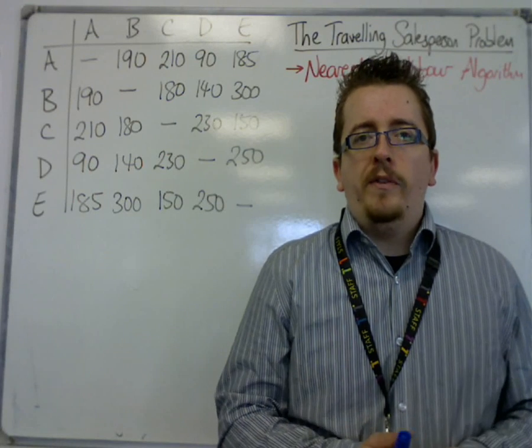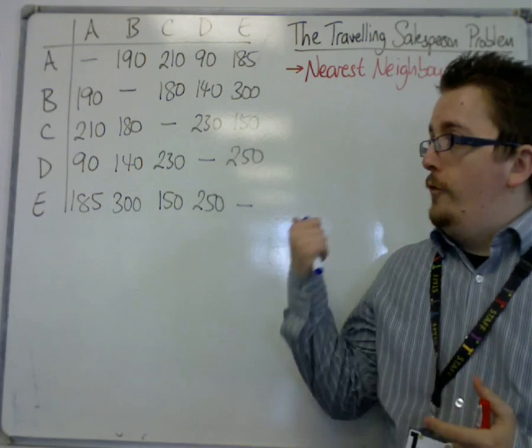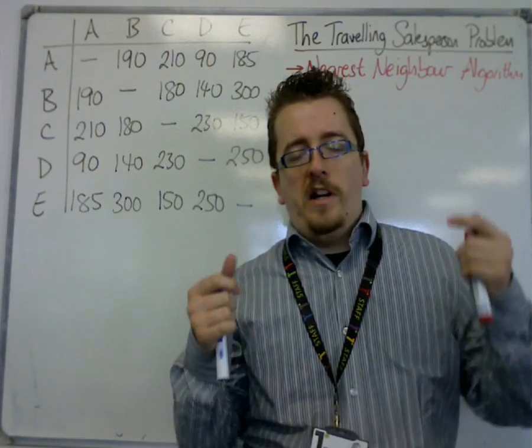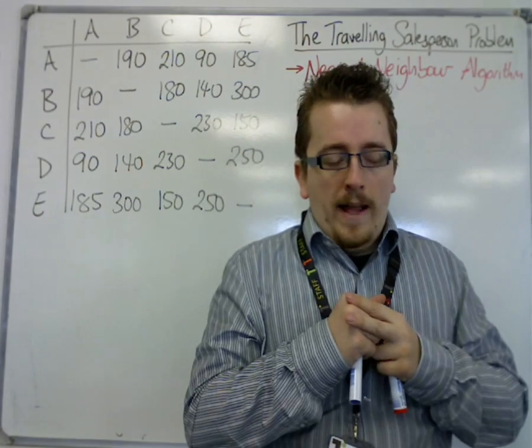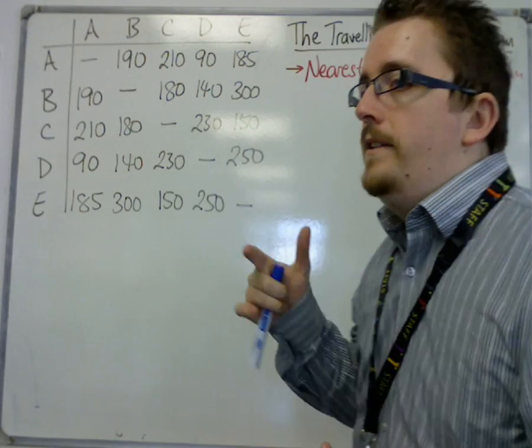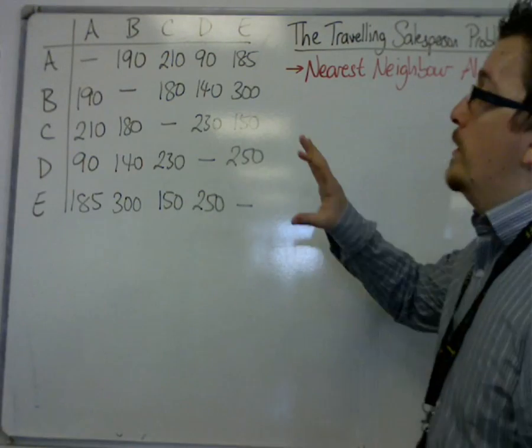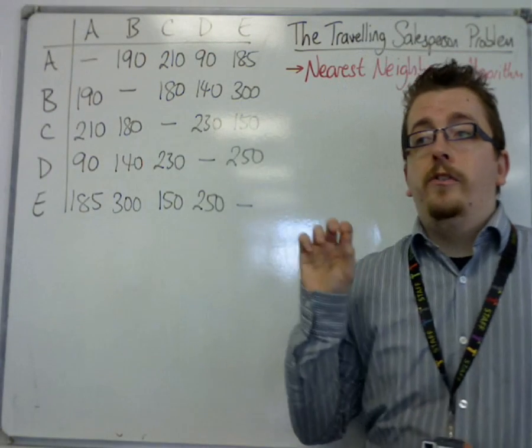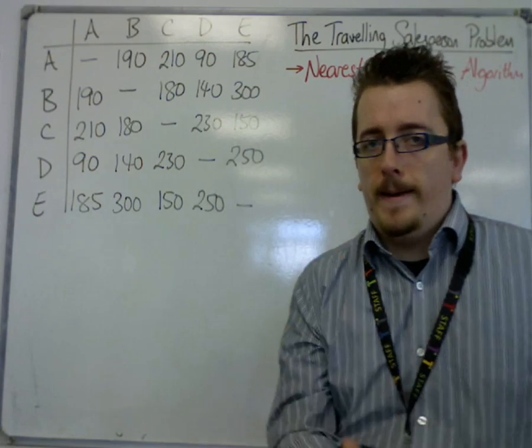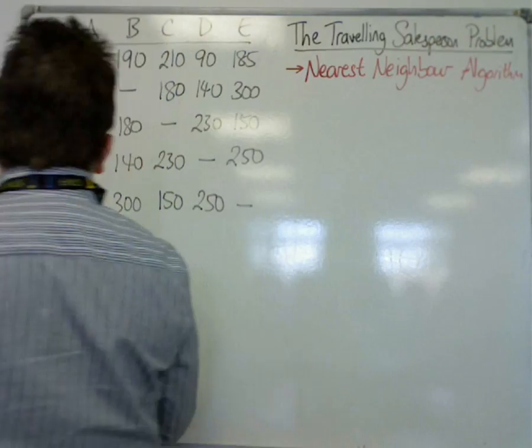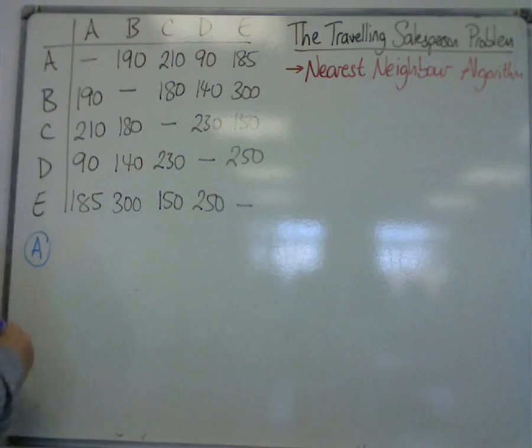Okay, I'm going to go through another example now with a different matrix, and to start we're going to look at the nearest neighbor algorithm. And in this, what we're going to say is that we're asked to start and finish at vertex A. So start and finish at vertex A in this case.